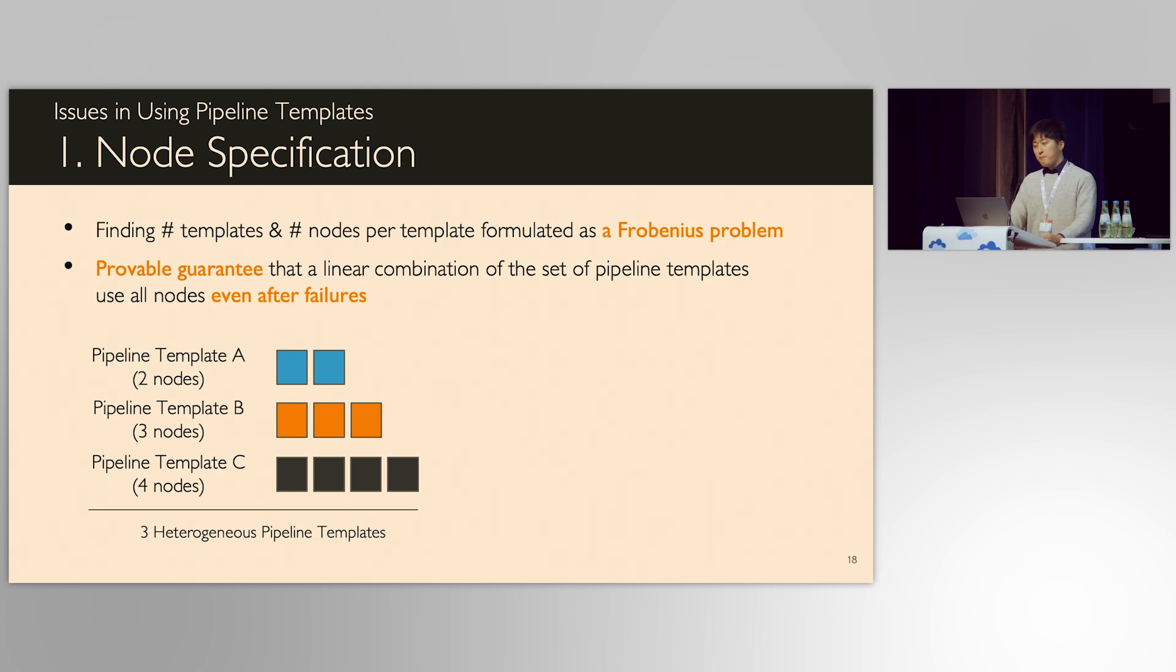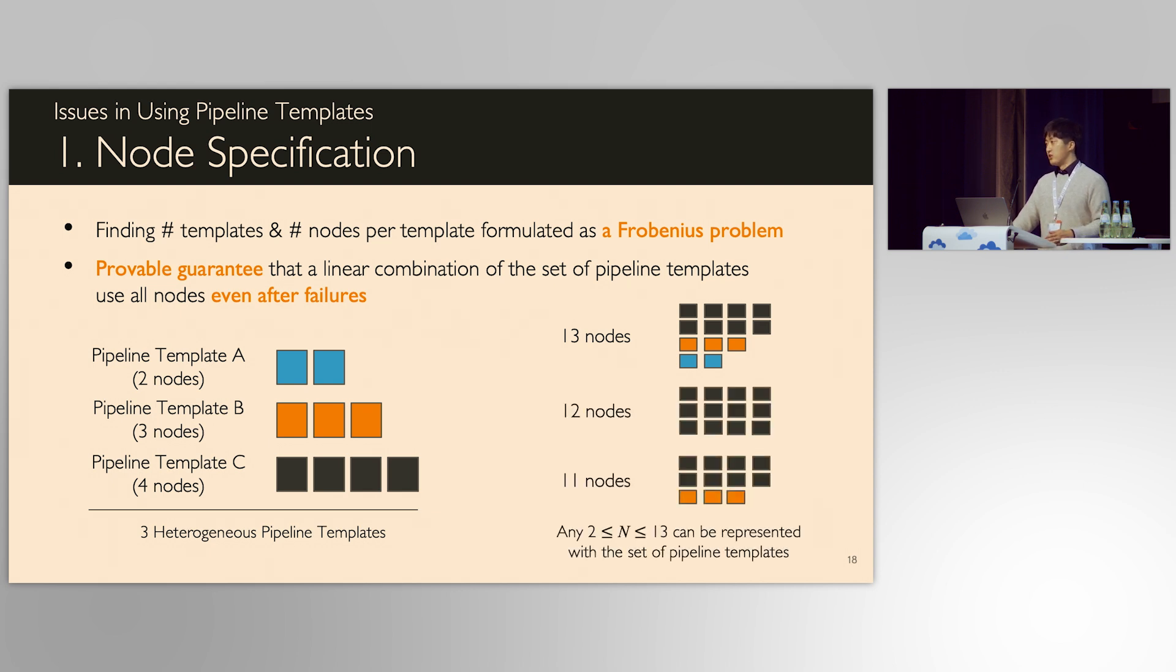How Ooblack finds the number of pipeline templates and the number of nodes per pipeline template? They are formulated as a Frobenius problem. Based on the formulation, it is provably guaranteed that the linear combination of the generated set of pipeline templates use all nodes. The beauty of this formulation is that they can cover not only the number of nodes at the beginning, which is 13 in our example, but also covers any number of nodes that is less than 13. So this guarantee enables that a pre-generated set of pipeline templates cover any failure situation, no matter how many failures happen, without adding additional templates during the runtime.